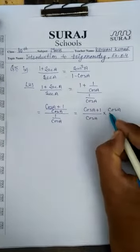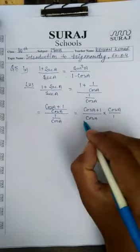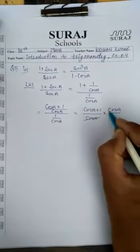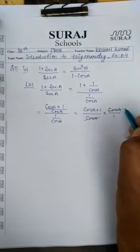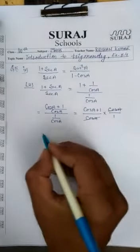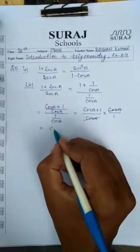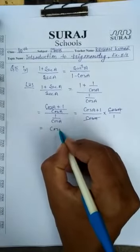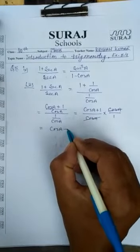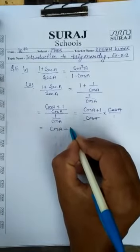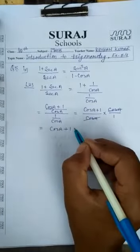In the denominator, cos A upon 1 multiplied — cos A cancels — and that gives us cos A plus 1.